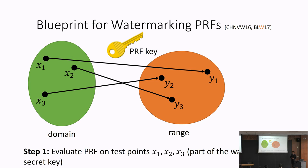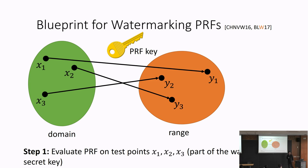The high-level blueprint works as follows. Our goal is to build a marking algorithm for a PRF — we want to embed a watermark within the key of a pseudorandom function. The first step is to take our PRF and evaluate it on a bunch of test points x1, x2, x3 — these test points will be part of the watermarking secret. We evaluate the PRF on these points to get the sequence of values y1, y2, y3.